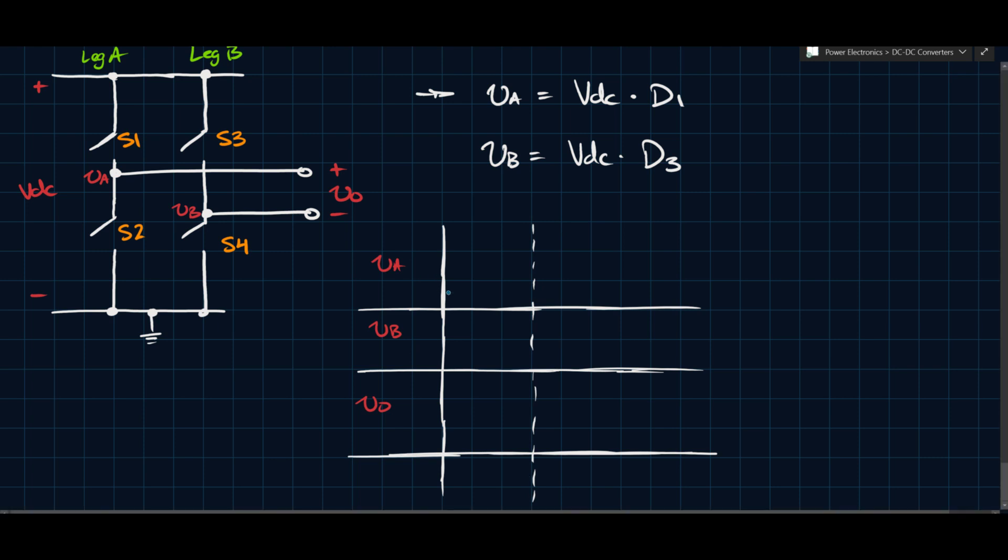And we'll call this thing here DT. And so when VA, or let's say from zero to DT, and then what do we have? Let's call this thing here T. So from zero to DT, let's say S1 and 4 are on.